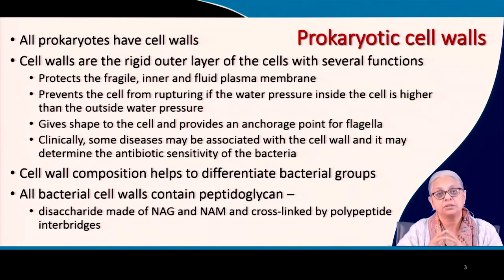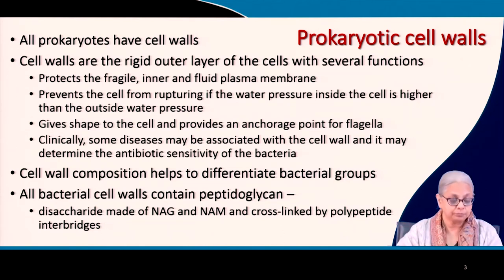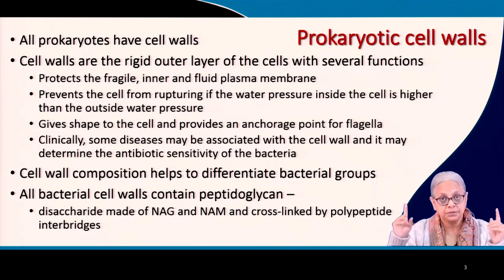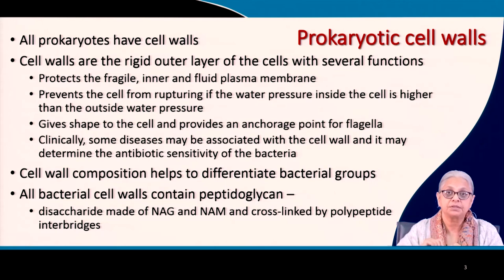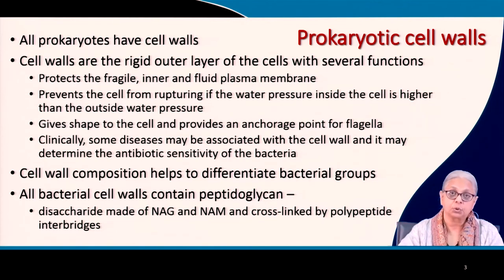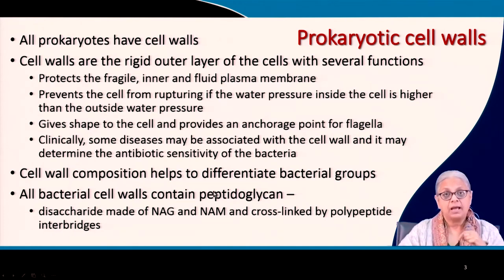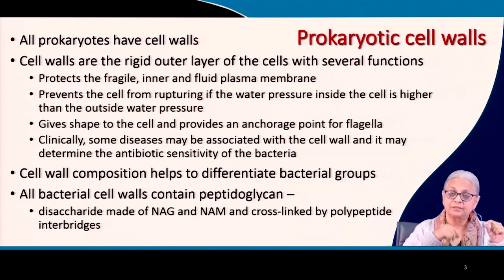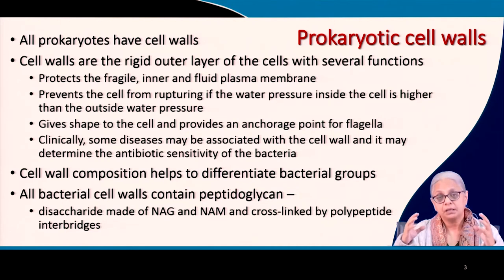Moving on to cell wall composition — the cell wall has different chemical composition in different bacterial groups or species, which serves as a marker for differentiating bacteria. What is common to all modern bacteria is that their cell walls contain a chemical called peptidoglycan. The glycan part is made of NAG (N-acetylglucosamine) and NAM (N-acetylmuramic acid), which are the building blocks forming the glycan strands, cross-linked to each other by polypeptide interbridges.